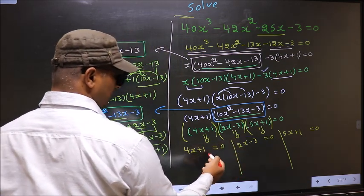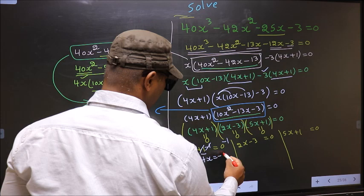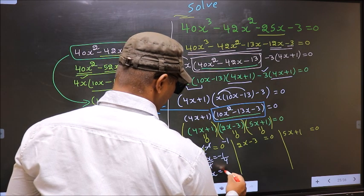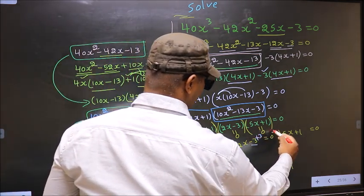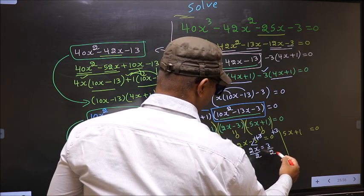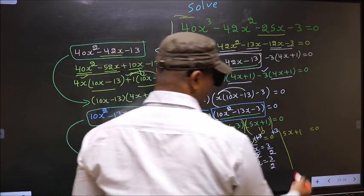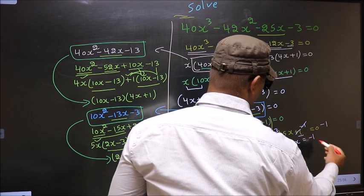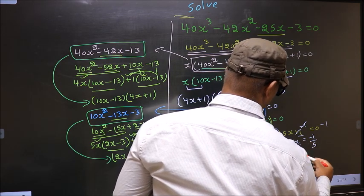Now to get x value from here, first we should remove plus 1 — for that you subtract 1. You get 4x equal to minus 1. Now you should remove 4, so you divide by 4. So you get x equal to minus 1 by 4. Now here you should remove minus 3 first — for that you add 3. So you get 2x equal to 3. Now you should remove 2, so you divide by 2. So you get x equal to 3 by 2. Now here first you should remove plus 1 — for that you subtract 1. So you get 5x equal to minus 1. Now you should remove 5, so you divide by 5. You get x equal to minus 1 by 5.